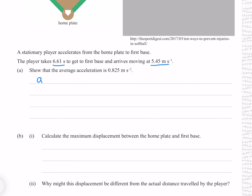Our average acceleration is our change in velocity divided by the duration over which it changed. The player started out stationary and reached a velocity of 5.45 meters per second, so our change in velocity is just 5.45 and our duration is 6.61, which indeed gives 0.825 meters per second per second to three significant figures.